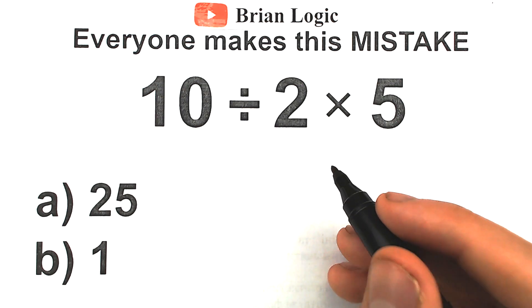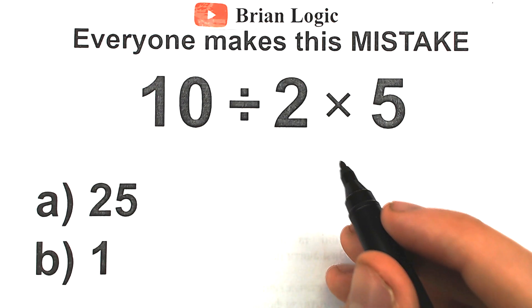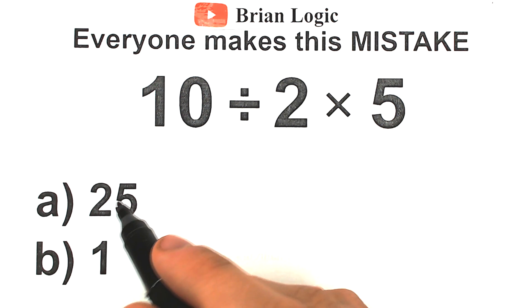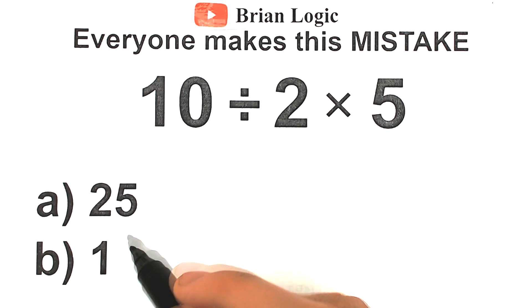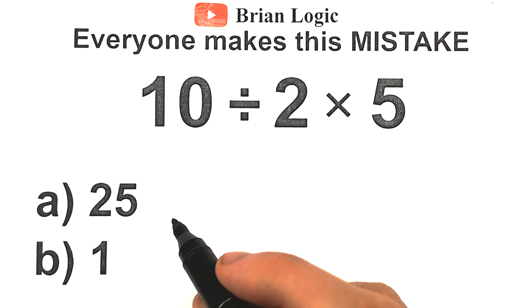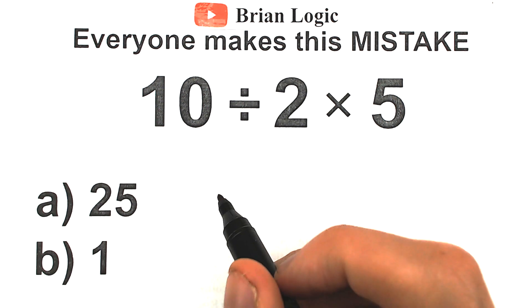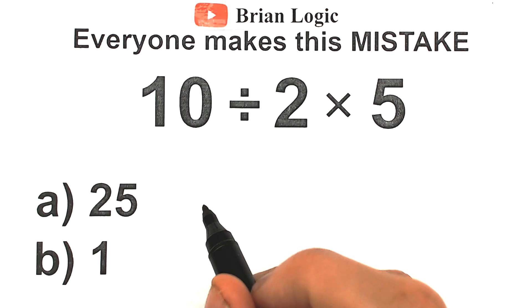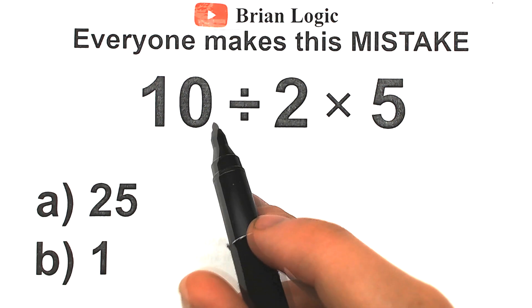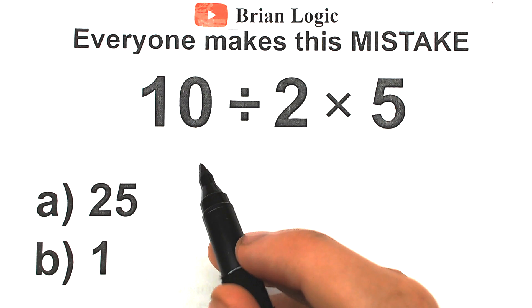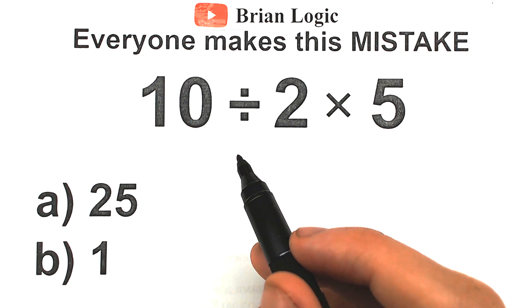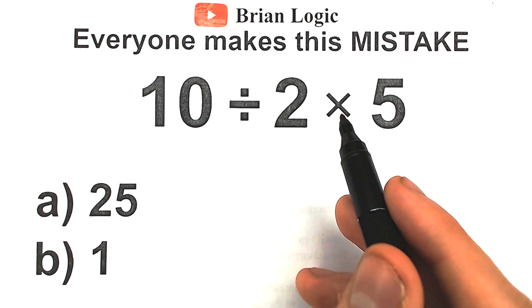I hope you've seen this question on different internet pages — a lot of people discuss the correct answer. One part of people say the correct answer is 25, another part say it's 1, and it turns into a big argument. In this video I'm going to fully explain the correct answer and the correct approach, showing you both interpretations. So let's figure out this super simple math problem: 10 divided by 2 times 5.